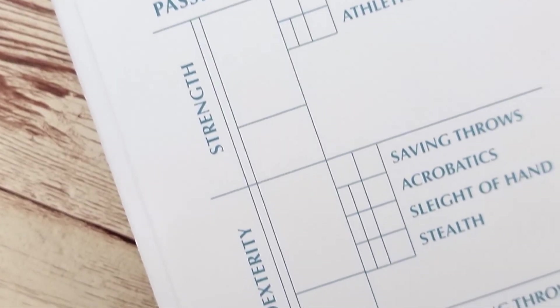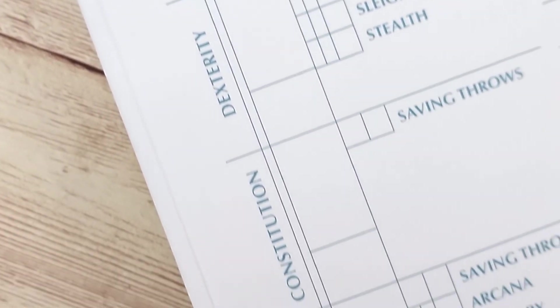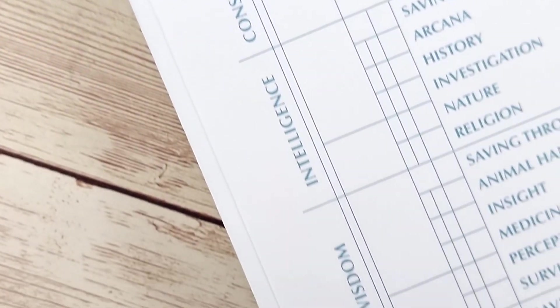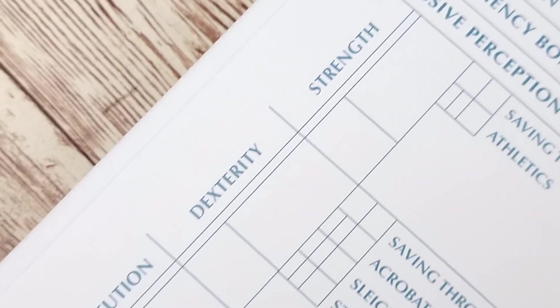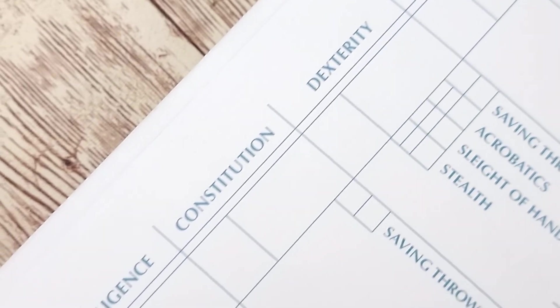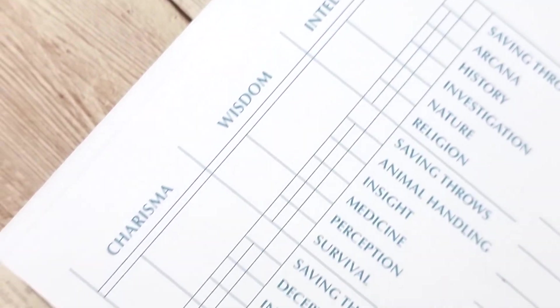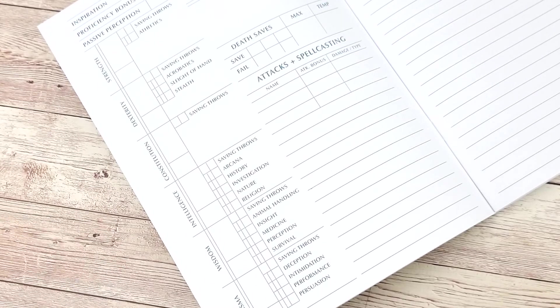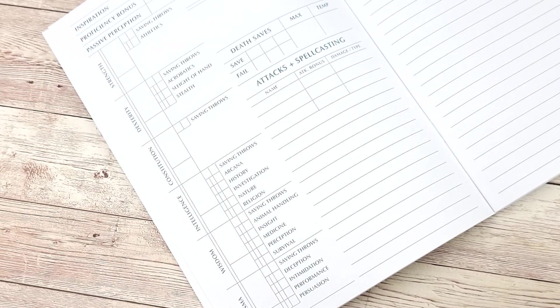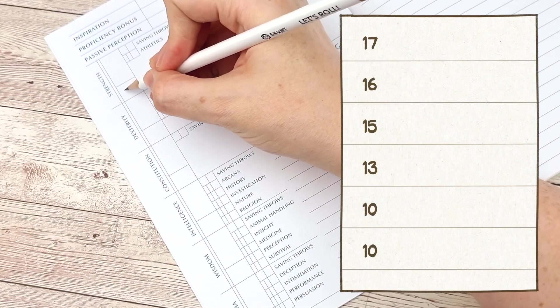However you arrive at having your set of six numbers it's now time to choose which ability will get each number. Where to assign each number is entirely up to you but the general advice is to pair the highest numbers with the abilities that your class uses the most. Today I'm going to be using the method of rolling to get my ability scores. Here are the numbers that I rolled.